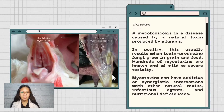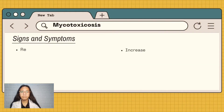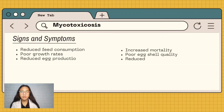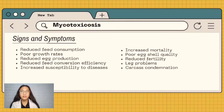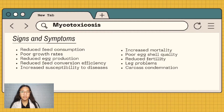The signs and symptoms of mycotoxicosis include reduced feed consumption, poor growth rate, reduced egg production, reduced feed conversion efficiency, increased susceptibility to diseases, increased mortality, poor eggshell quality, reduced fertility, leg problems, and carcass condemnation.